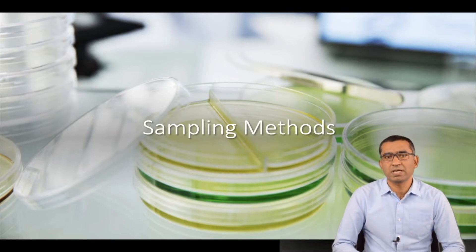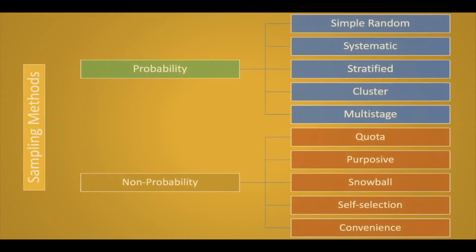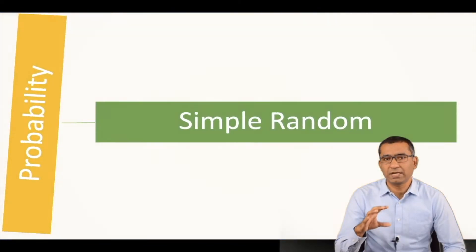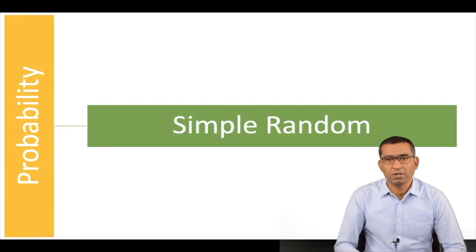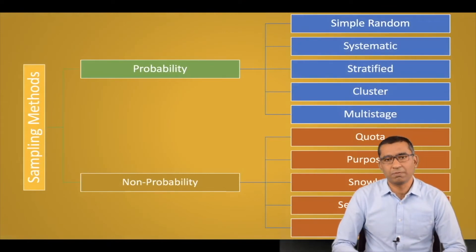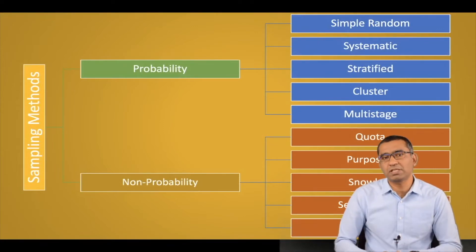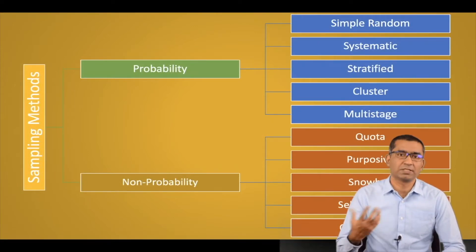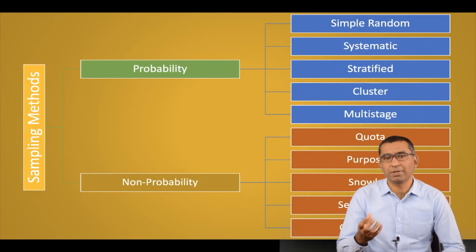We have two broad possibilities: probability sampling and non-probability sampling. In probability sampling, the possibility of being selected is equal for all elements in the sampling frame — everyone has equal chances to be selected as a respondent.